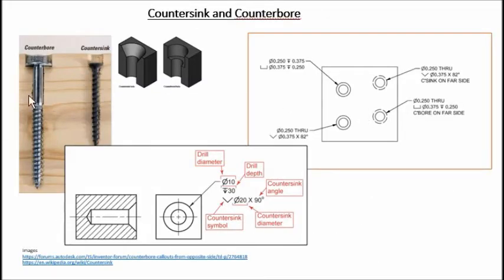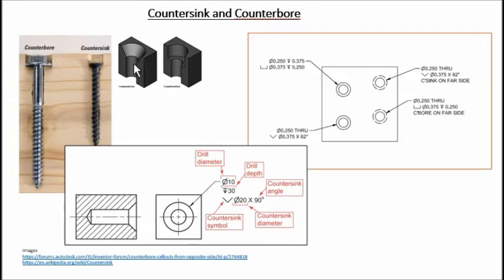You might also get questions on countersink and counterbore. These are symbols that can occur on a drawing, so any type of symbol on a drawing could be examined. The difference is: counterbore — you drill a hole and then counterbore at the top to create a flat-bottomed profile, used when you want a bolt to sit flush on top. If you countersink, you drill the hole and then use a countersinking tool to create a triangular angled portion to fit the neck of a screw.